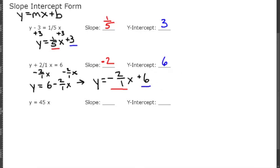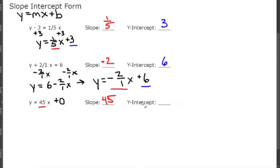The last one is a little tricky because it does not give us what the intercept is. We know the slope is 45 because 45 is multiplied to the x, and the slope is always m. But there is no y-intercept shown, which means you're adding 0 to this equation. So the y-intercept is simply 0.